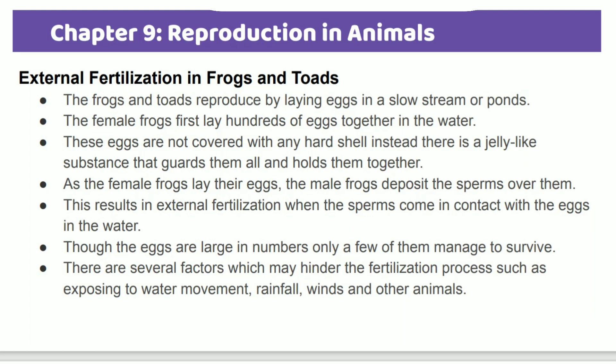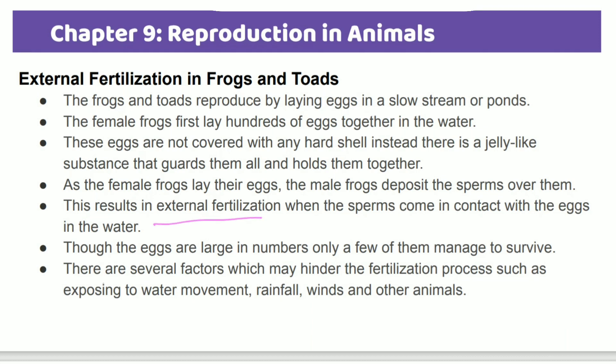In external fertilization, the female frog lays hundreds of eggs in the water. The eggs are not covered with a hard shell; instead, they are surrounded by a jelly-like substance. Then the male releases sperm over these eggs. Because many eggs are exposed to water, rainfall, and other animals, a large number of eggs are produced so that at least some will survive.